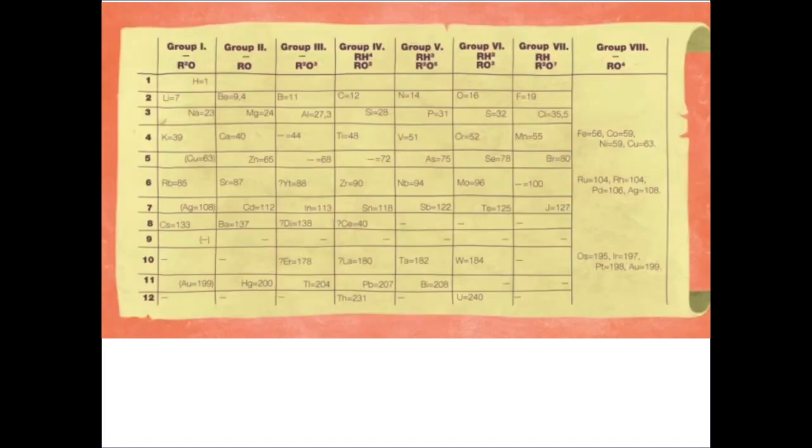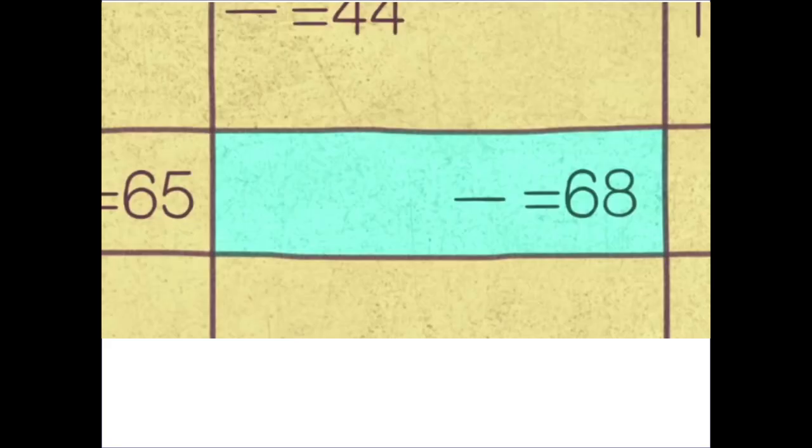Let's look at one of the first versions of the Periodic Table from around 1870. Here we see elements designated by their two-letter symbols arranged in a table. Check out the entry at the third column, fifth row. There's a dash there.